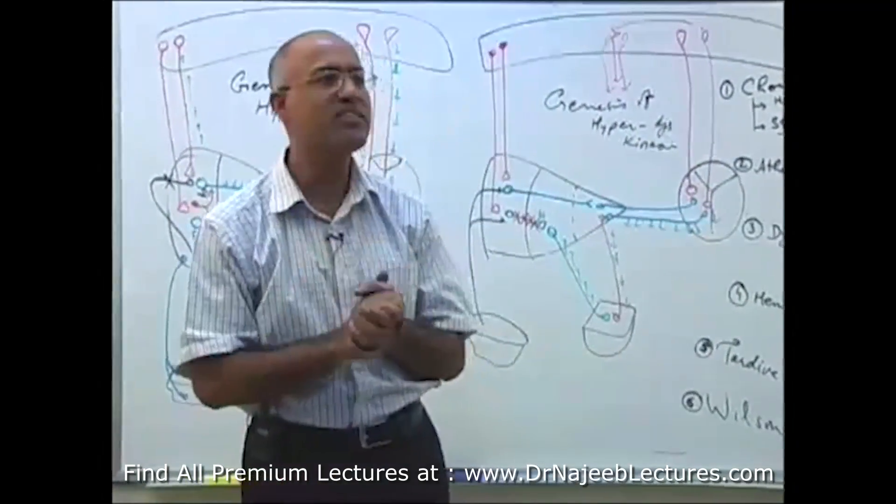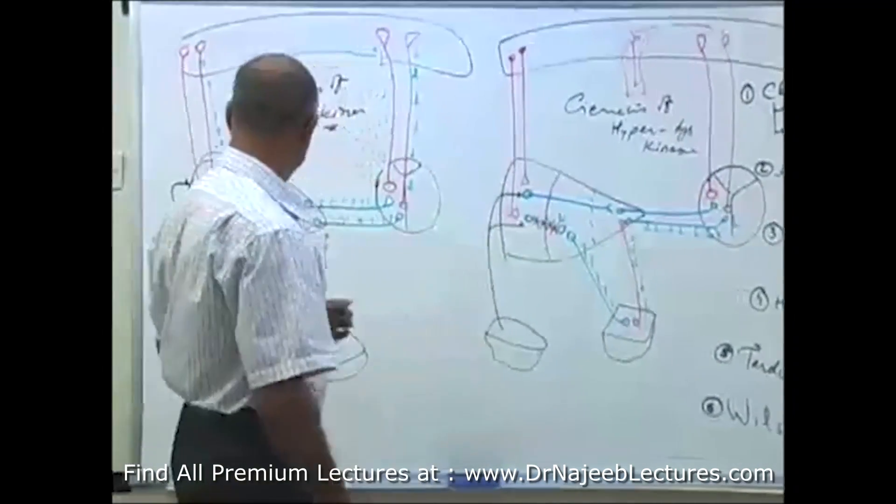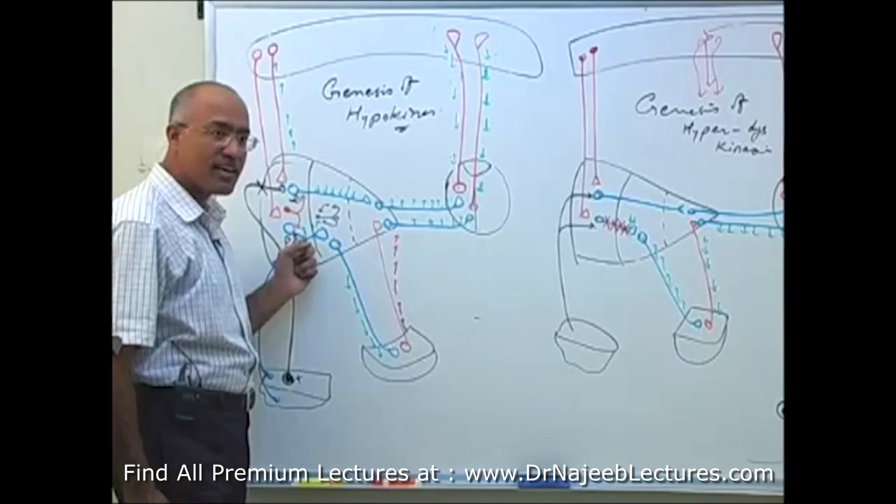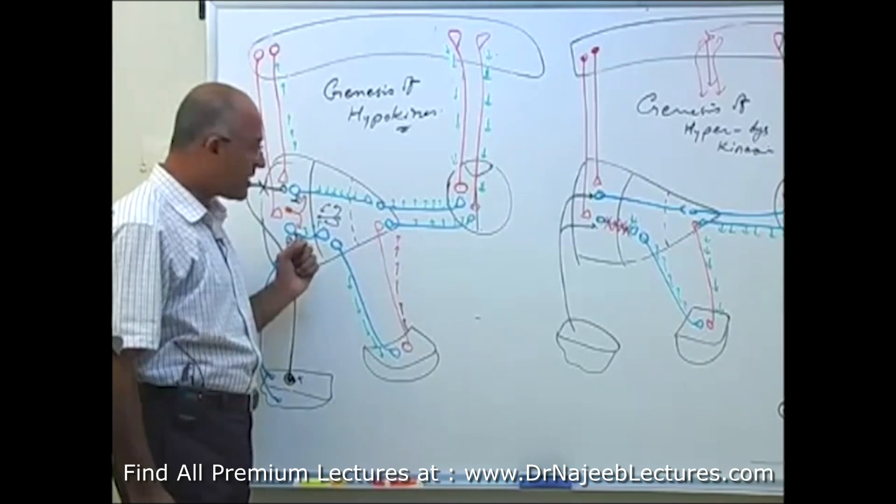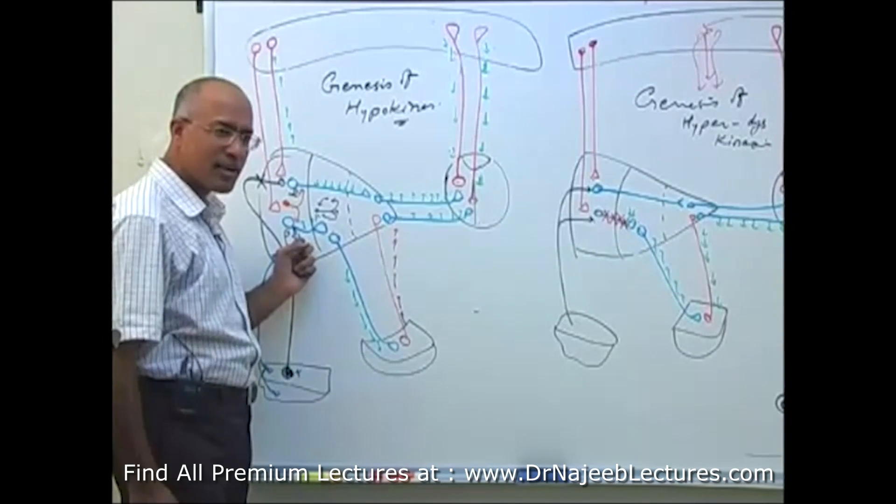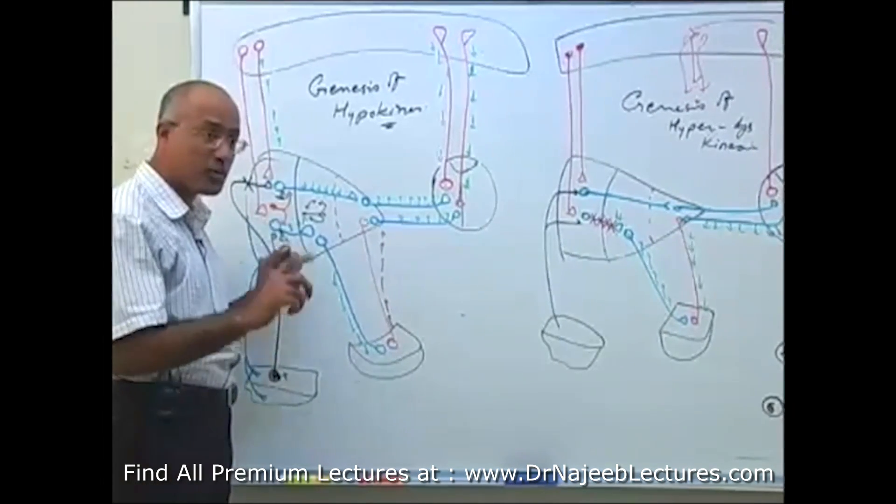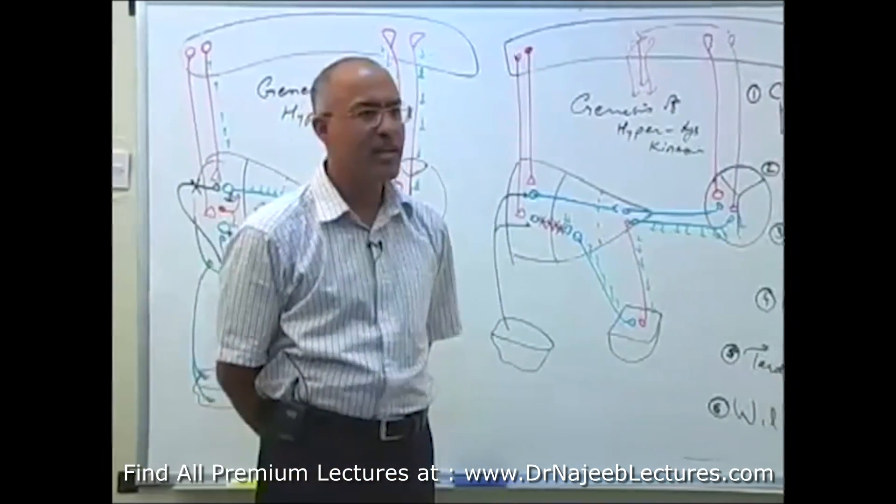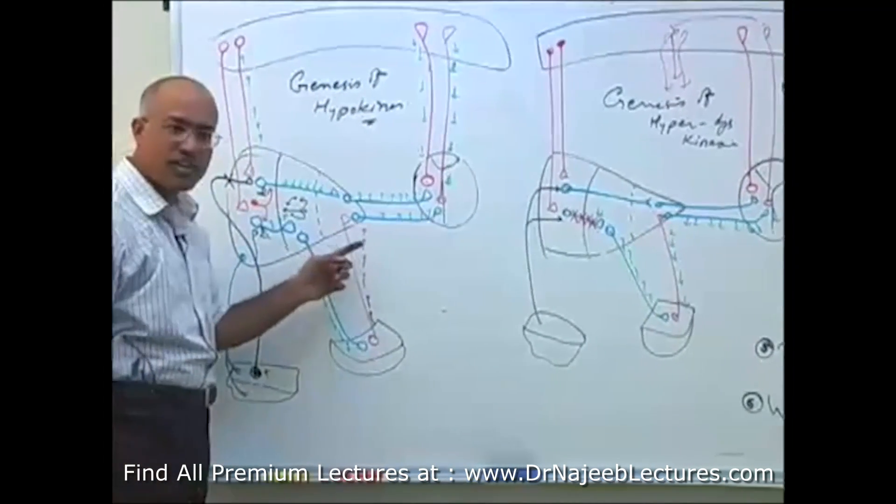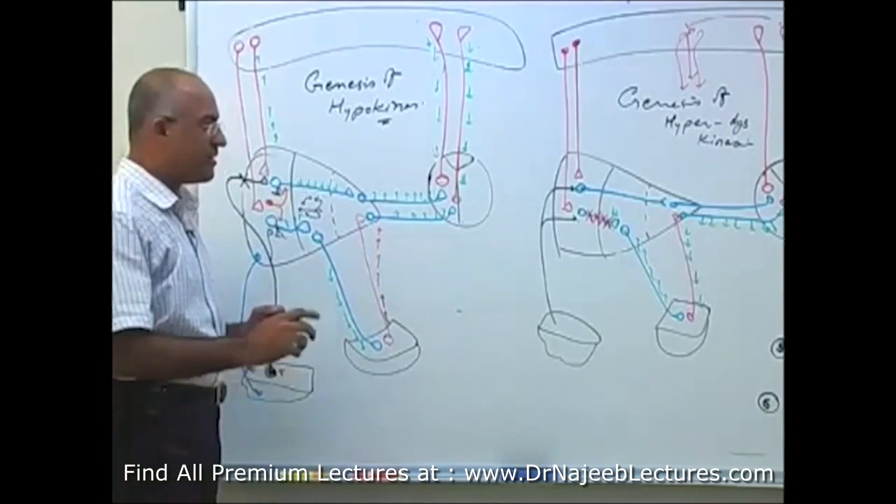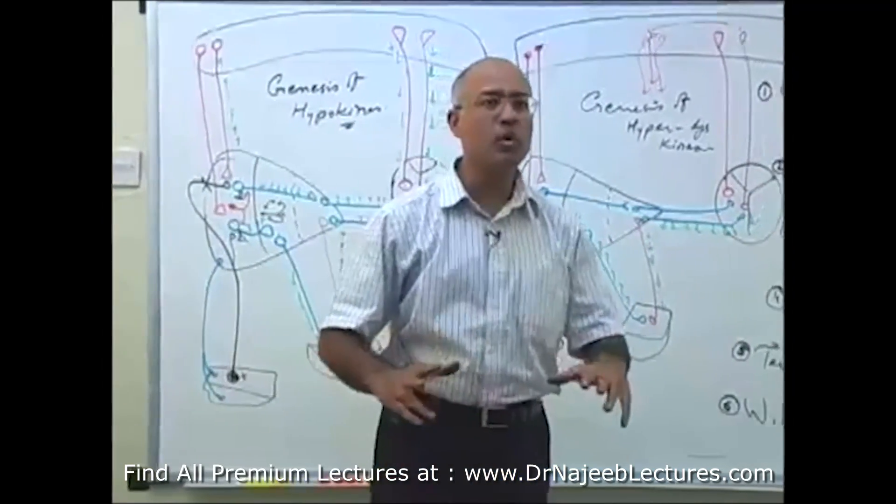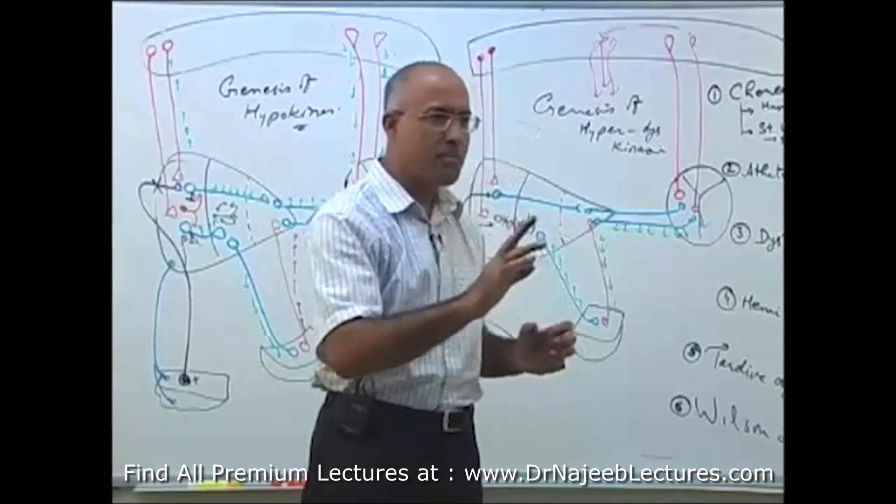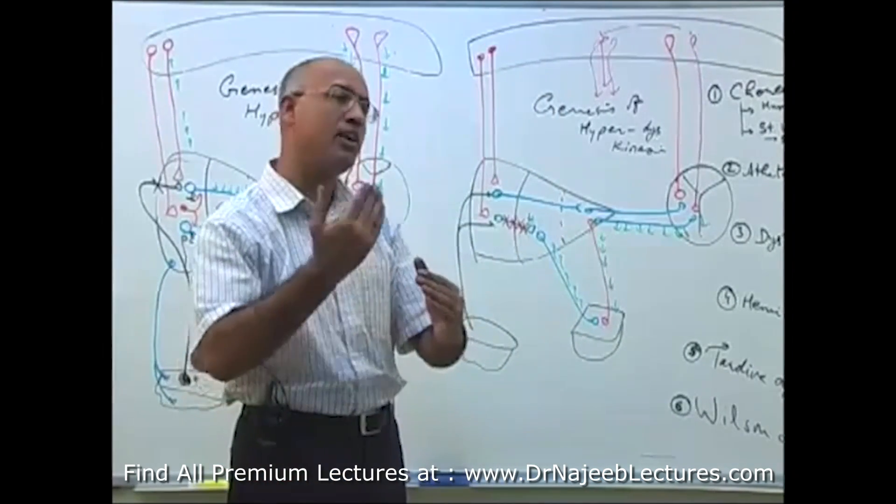What is this? Chorea is basically damage to this system. When GABAergic neurons in the caudate nucleus are damaged, especially in putamen, when GABAergic neurons in caudate nucleus are damaged, what really happens? Indirect pathway is dysfunctional, and many motor programs are abnormally released.